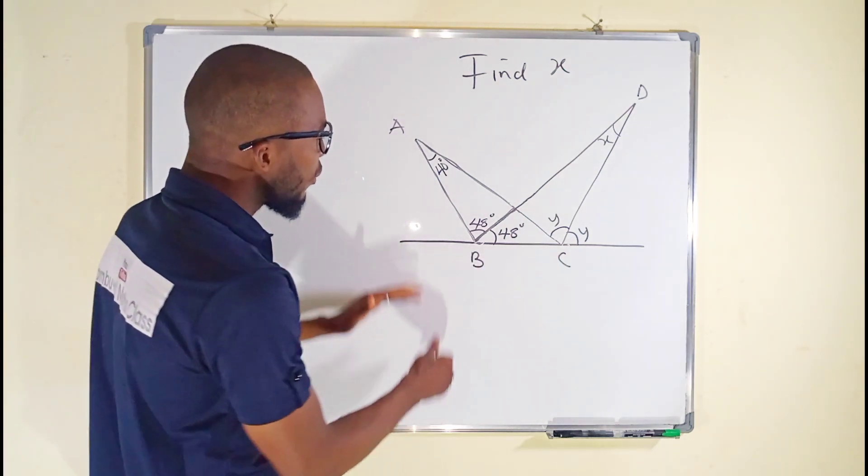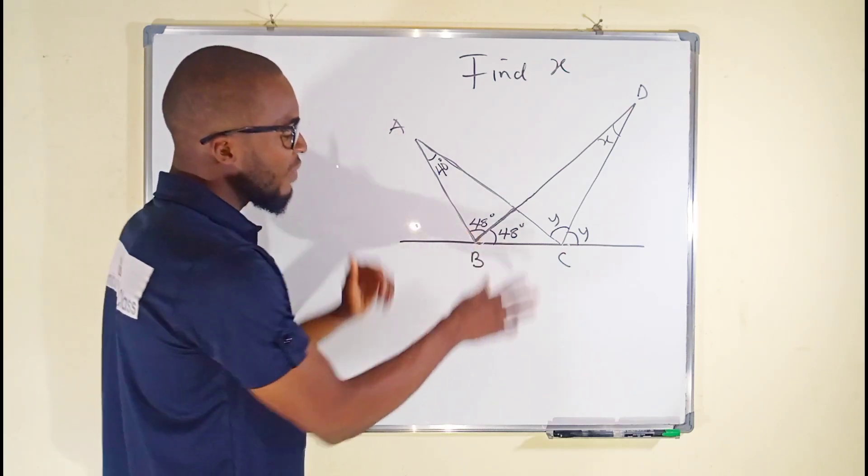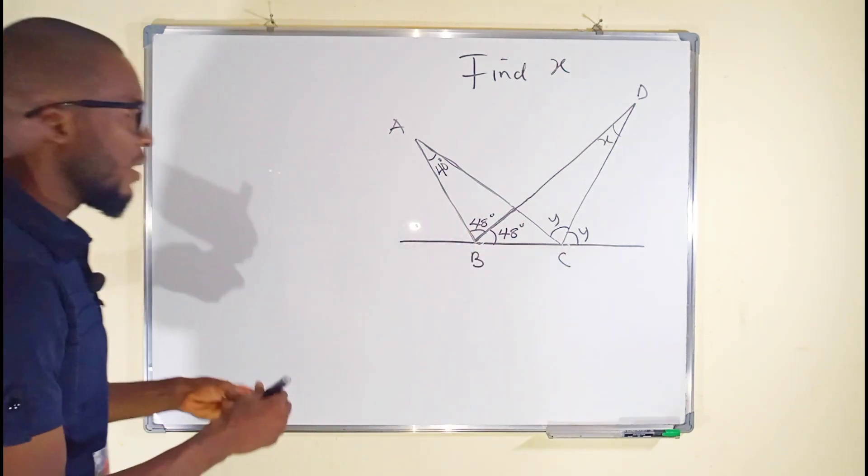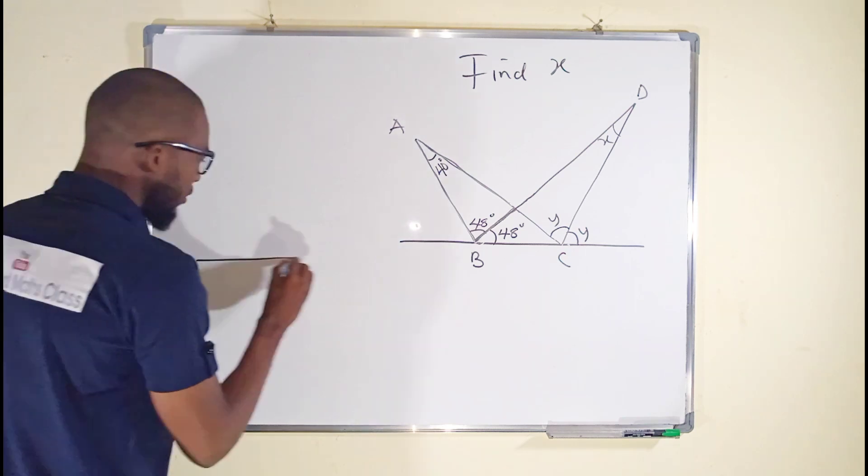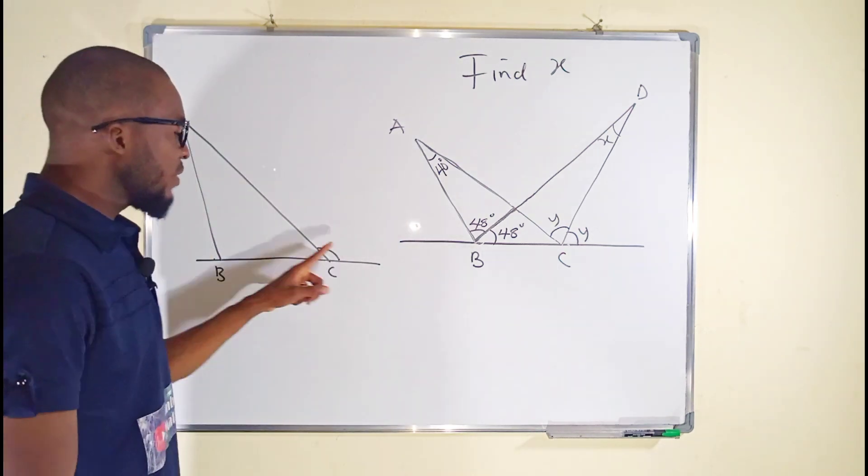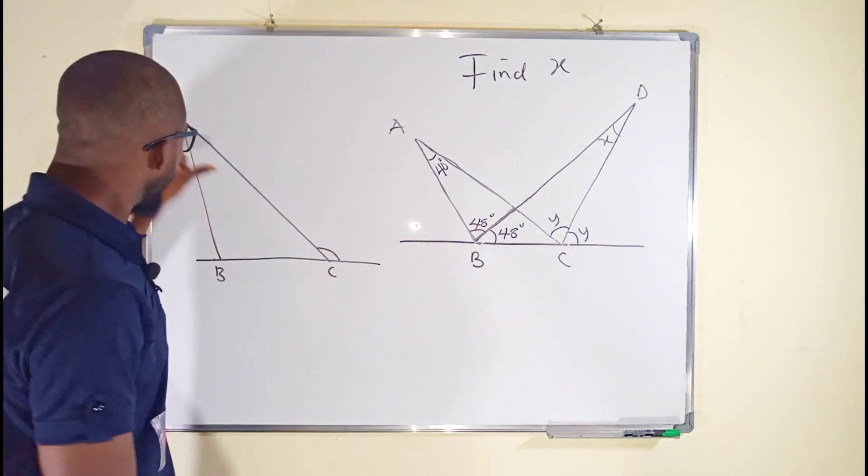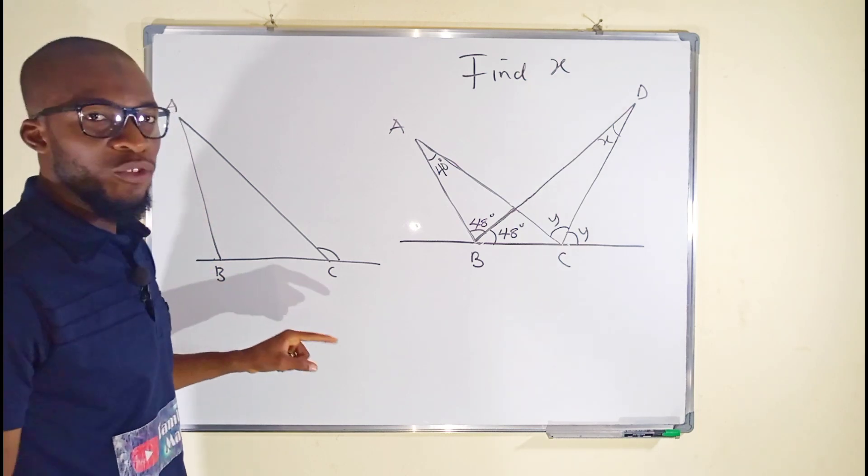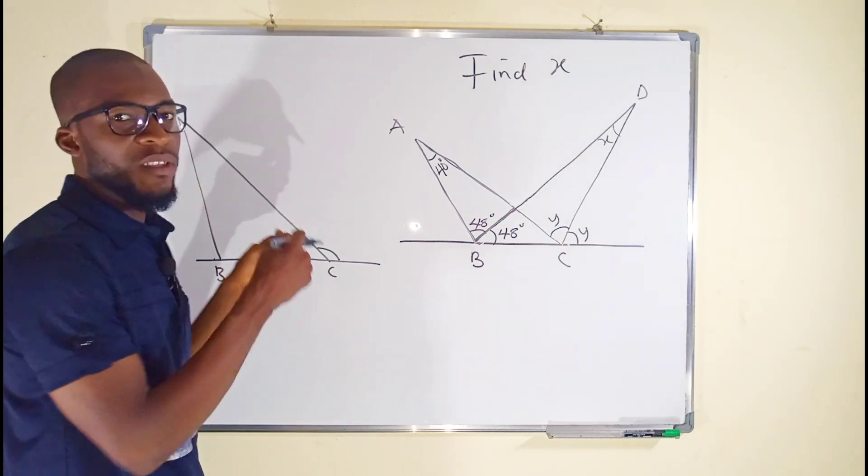So now let us first of all consider this triangle ABC. Let me make a sketch of that. This is an exterior angle of this triangle ABC. You know all angles inside are said to be interior and the one outside is said to be exterior.